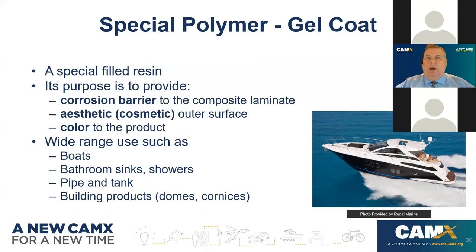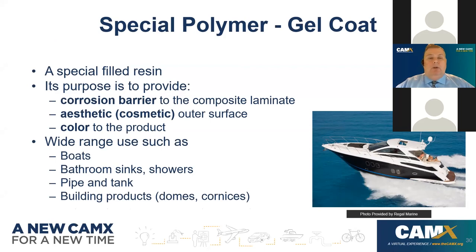There is a special polymer called a gel coat — a specially filled resin whose purpose is to provide a corrosion barrier for the composite laminate, provide a cosmetic appearance, and introduce color into the product. You can see gel coat in boats, bathroom sinks, tubs and showers, pipe and tank applications, and building products like domes, cornices, and facades.